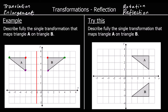To describe a reflection, we need two bits of information. The first bit is that it's a reflection — so we can write 'reflection'. And then we need to know the equation of the mirror line: in which line is it reflected? And it's this line here.